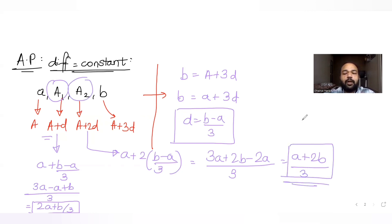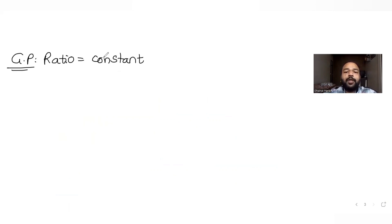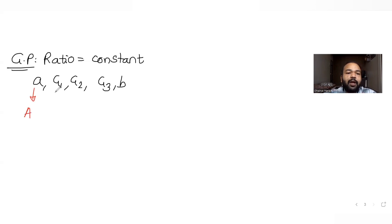Now let's look at the geometric progression. In a GP, the ratio between consecutive terms is constant. If we insert three geometric means g1, g2, g3 between a and b, we have the five terms: a, g1, g2, g3, b — which in GP form are a, a·r, a·r², a·r³, a·r⁴.